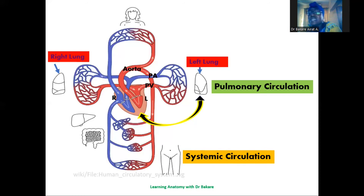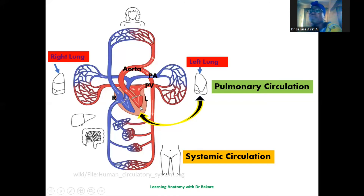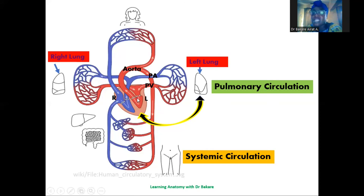Pulmonary circulation and systemic circulation work hand in hand. The pulmonary circulation is between the heart and the lungs, and its aim is for blood to be oxygenated. After being oxygenated, the blood is delivered back to the heart — because the heart has the sole responsibility of pumping the blood. It is returned through the pulmonary vein to the left side of the heart. From the left side, the aorta takes it and delivers oxygenated blood to the different systems of the body — and that is the systemic circulation.